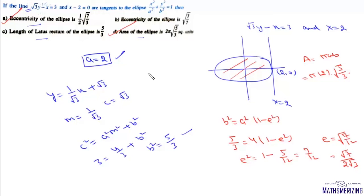And finally, we need to find the length of latus rectum. Length of latus rectum is 2b²/a, so it will be 2, and b² is 5/3, and the value of a is 2. So the length of latus rectum is 5/3, and that's your option number C. So for this question, options A, C, and D are correct.